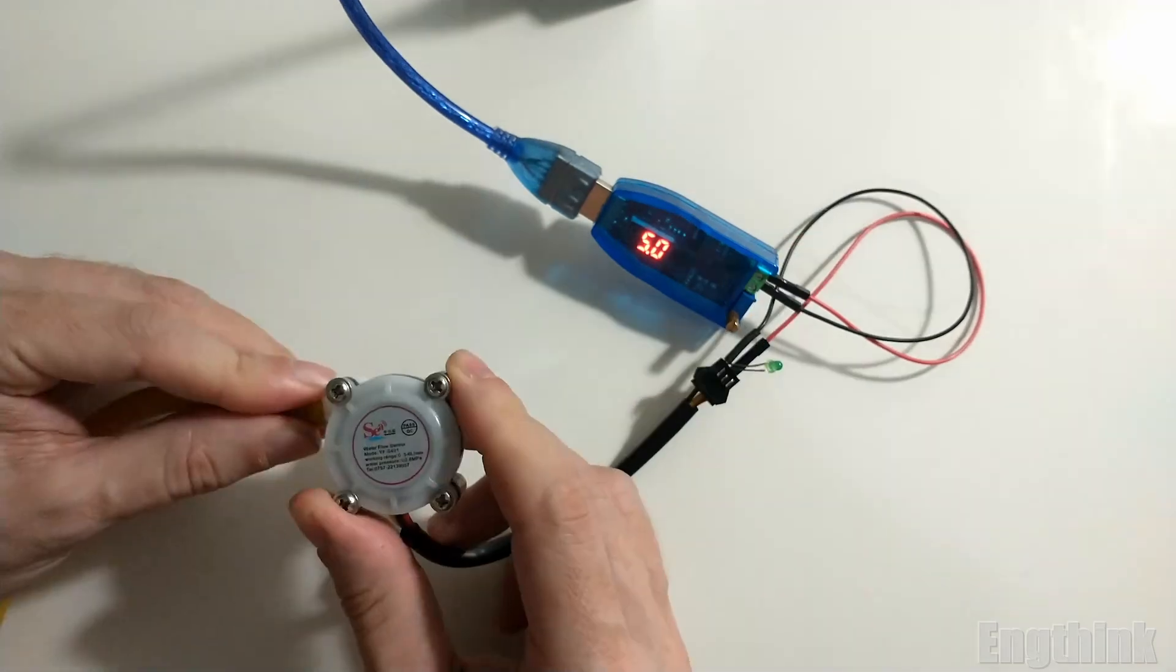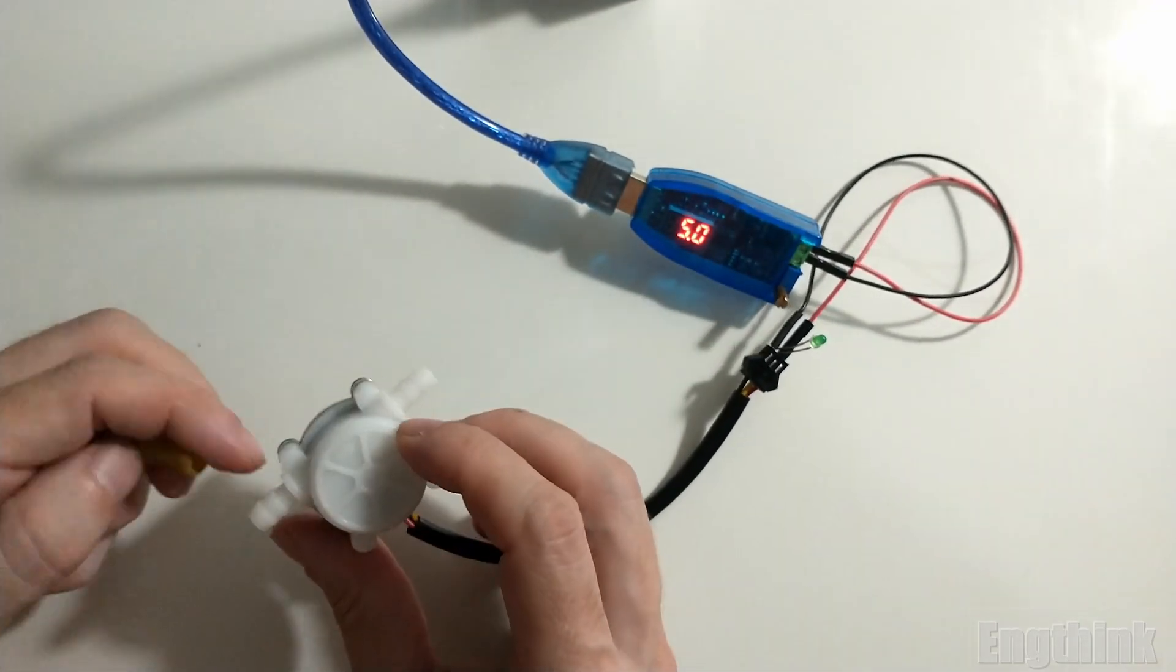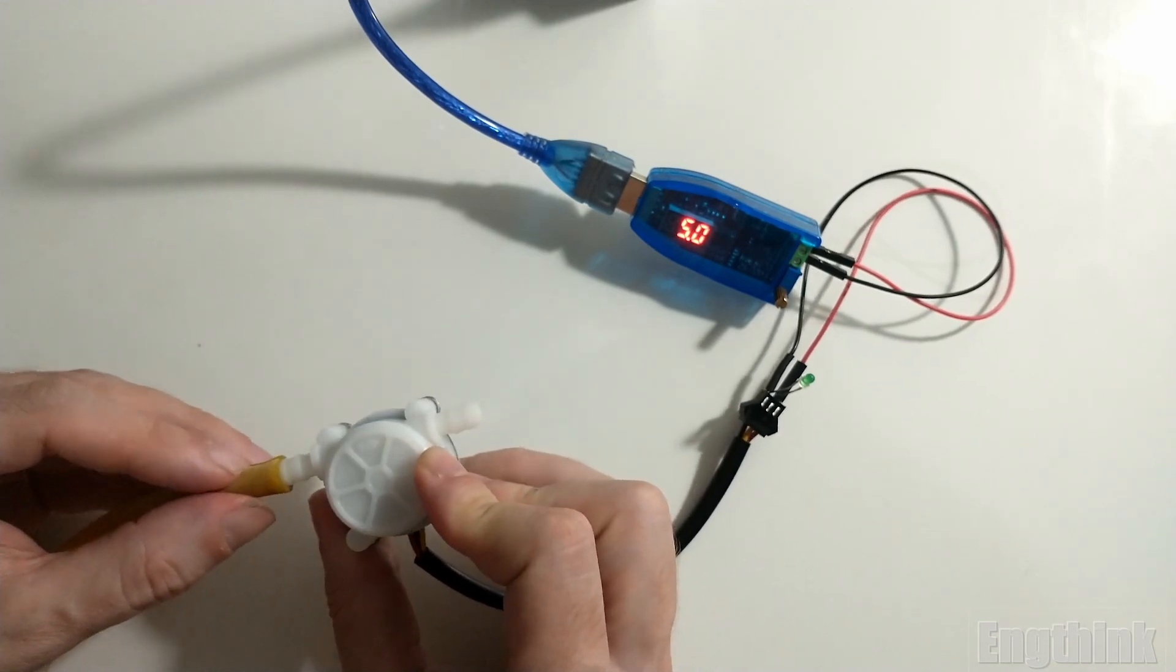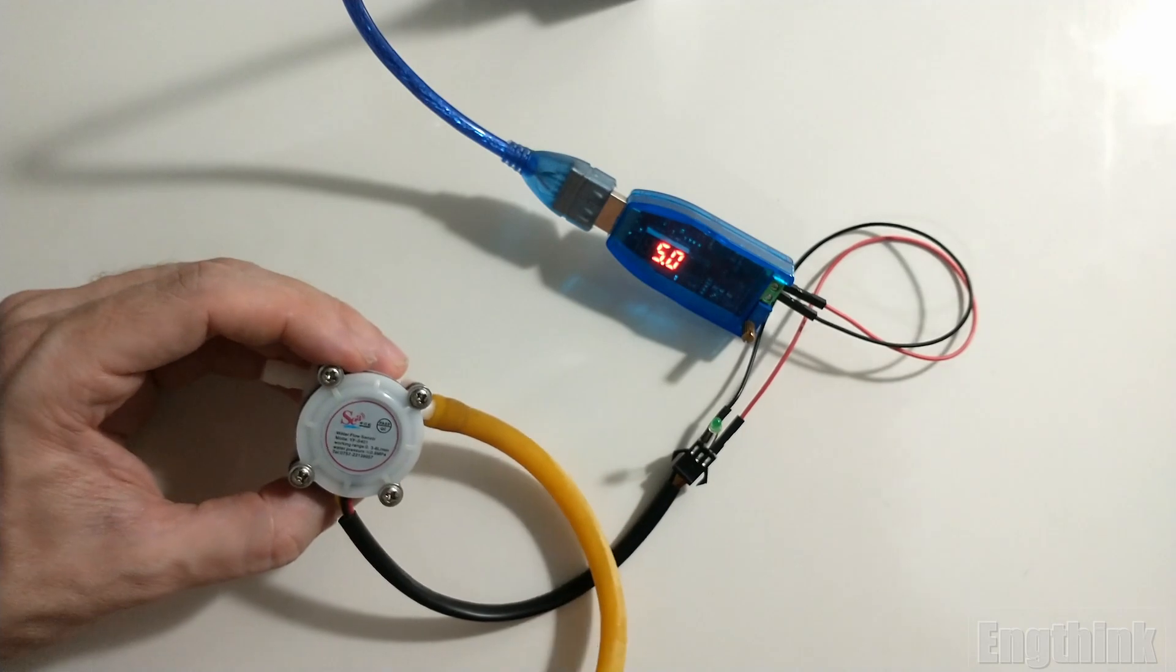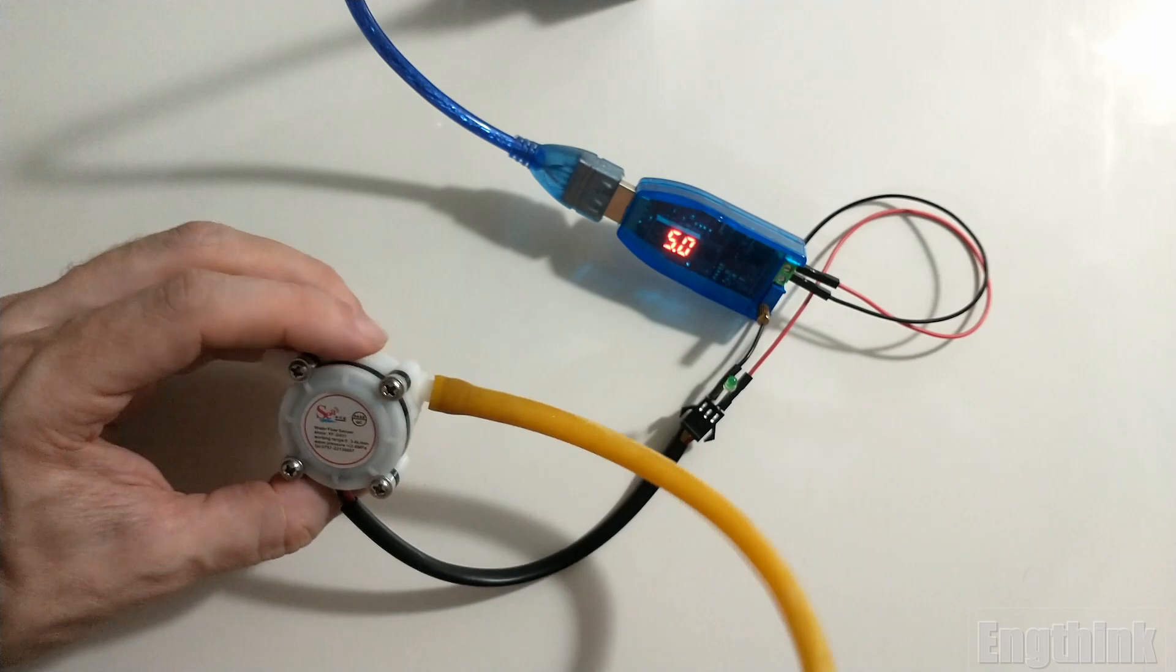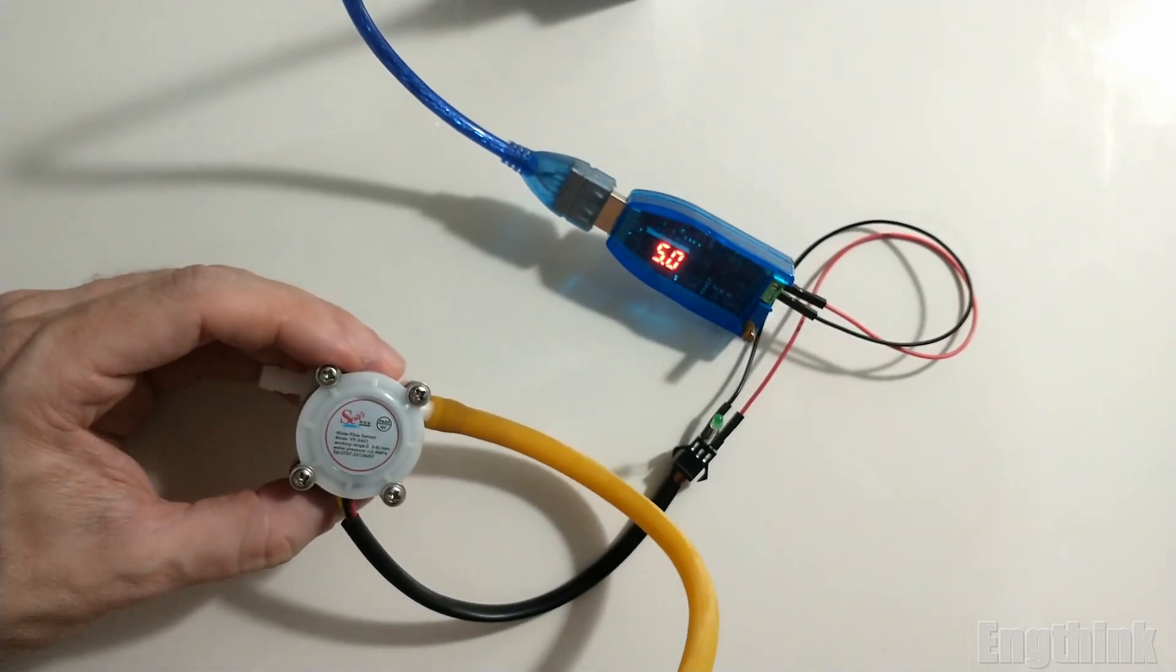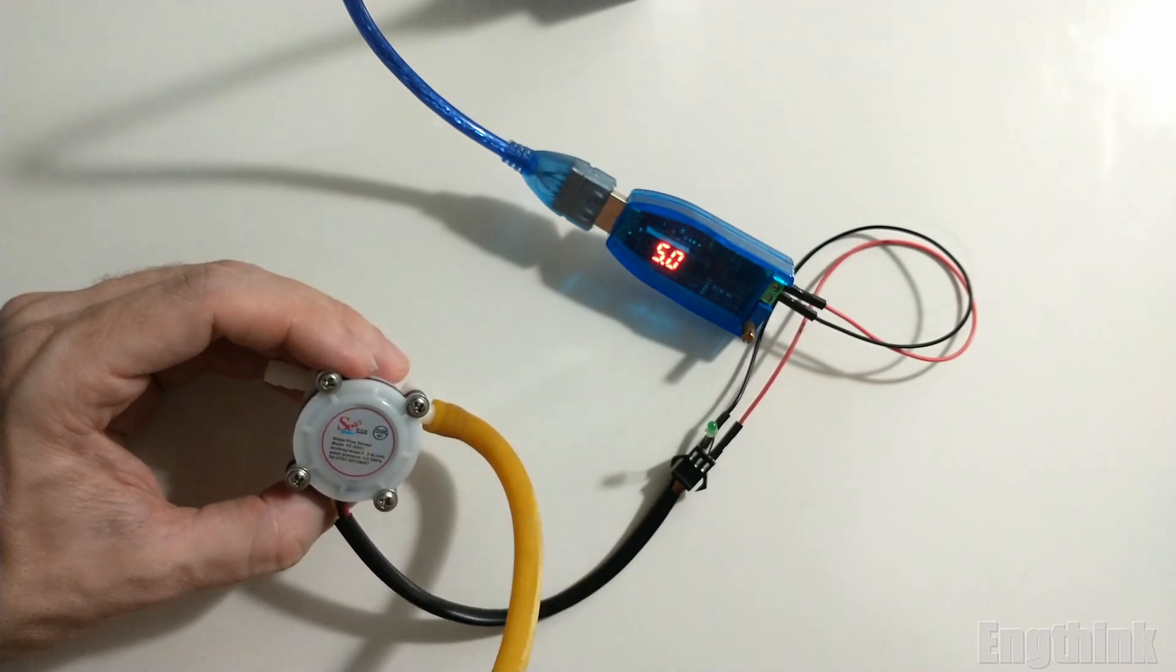Now, connecting this rubber tube, we just need to pay attention to the direction of the flow. I will blow air and we will see the LED blinking according to the flow rate. As you can see, when air is blowing through the sensor, the LED is blinking.